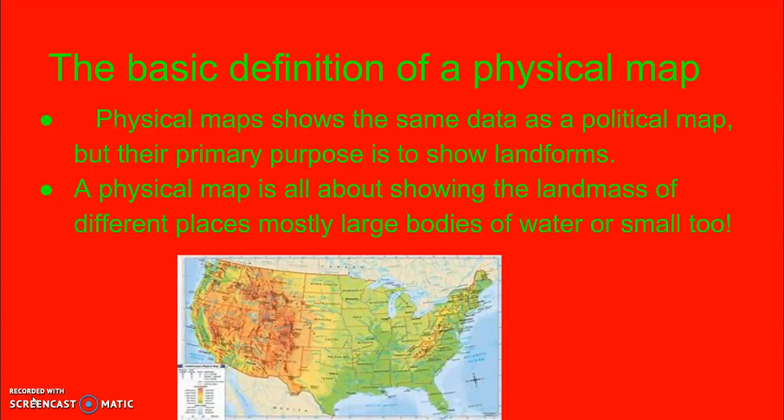Physical maps show the same data as a political map, but their primary purpose is to show landforms. A physical map is all about showing the landmasses of different places, mostly large bodies of water or small too.